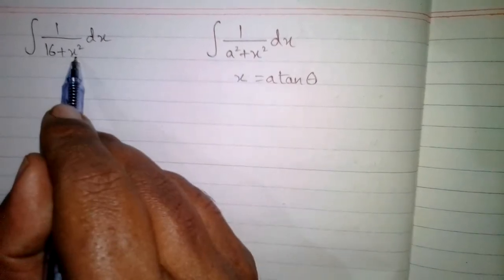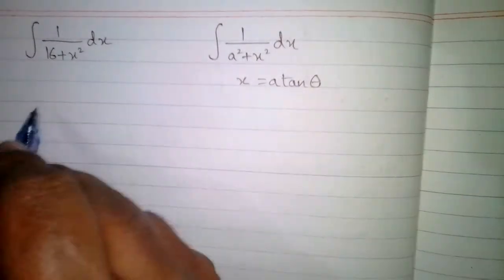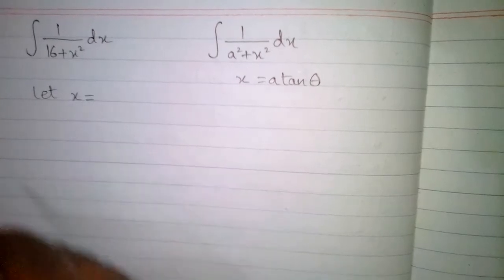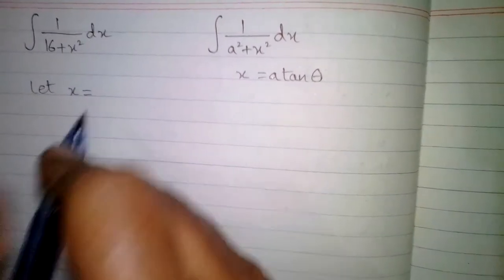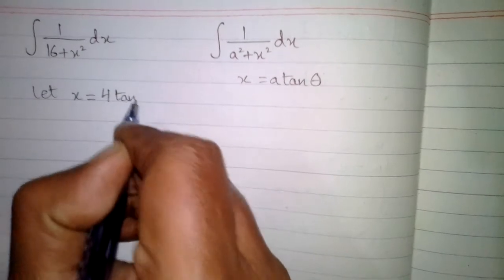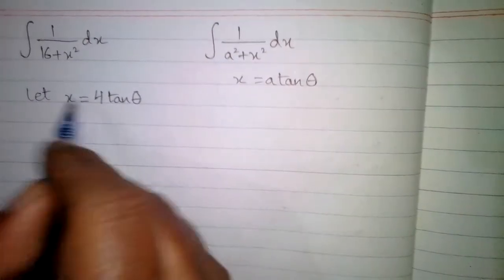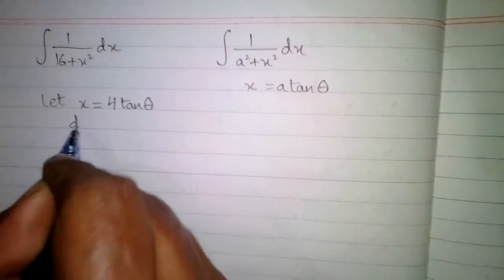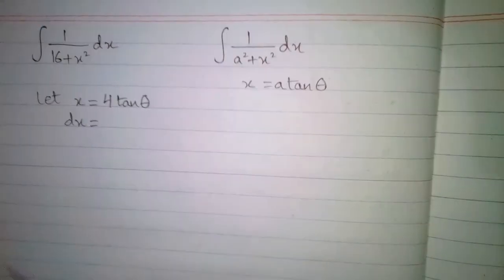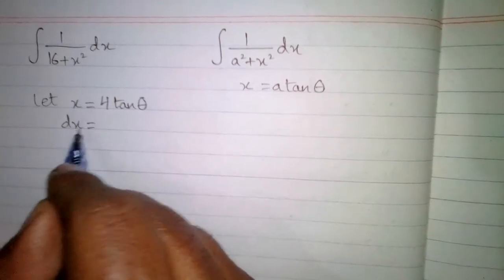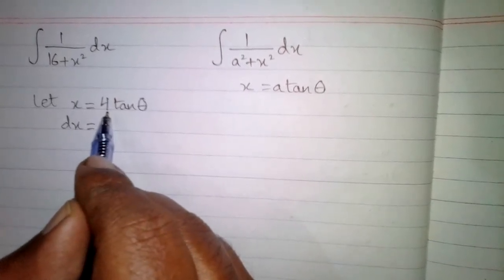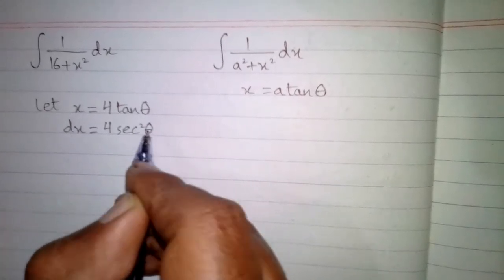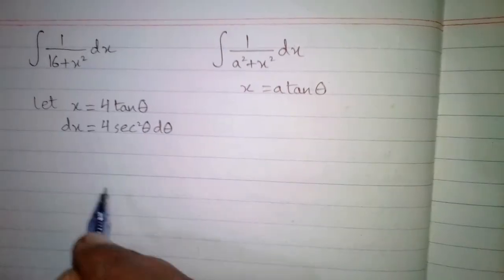Since x square appears in place of x square, we let x equal to 4 tan theta, because 4 is the square root of 16. Now we will find the differential dx. The differential dx is the derivative of 4 tan theta, which is equal to 4 sec square theta multiplied by d theta.